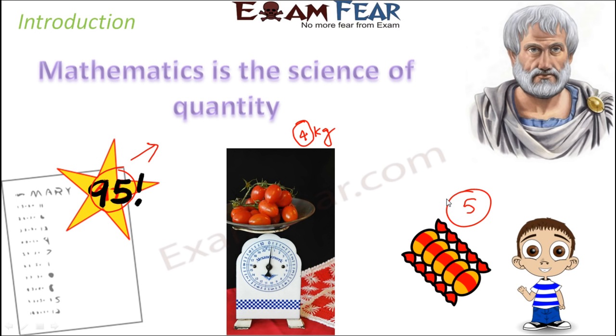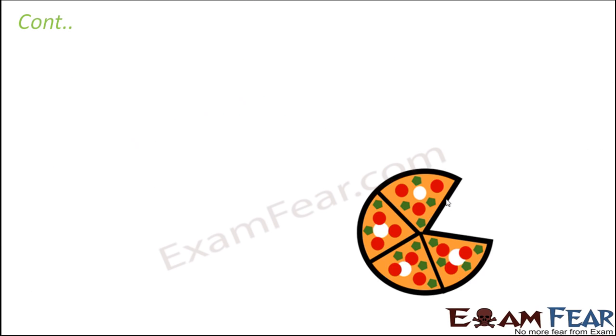But you need a number. Now, not always do numbers look like one, two, three, four, five. Sometimes we also need different types of numbers. Let's take this example.